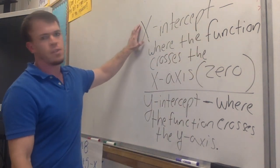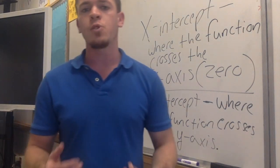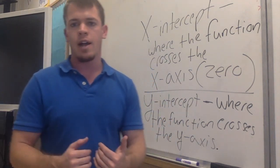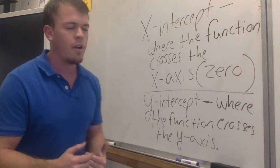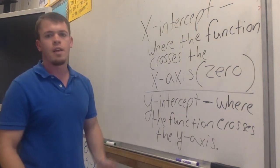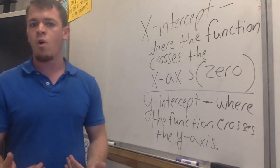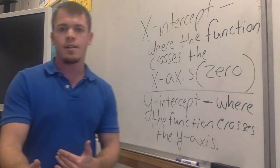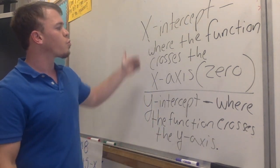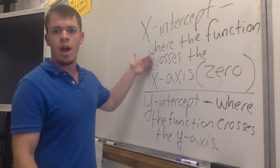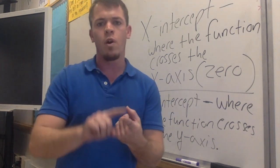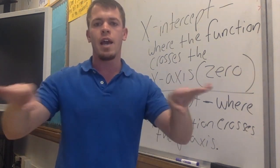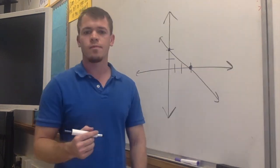Number one is the x-intercept. What is the x-intercept? That's where our function crosses the y-axis. How about our y-intercept? It means the same thing for y — it's where our function crosses the y-axis. So what we want to do is look at a graph and see what is our x-intercept and what is our y-intercept, looking at where that function crosses the axis.